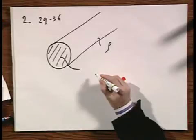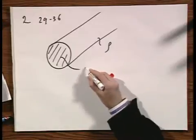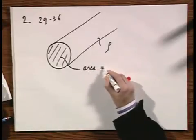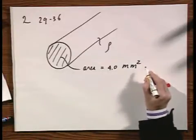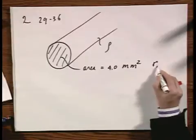I don't know what you want to call that area, whether you want to call it πr², it's an area. And it is 4.0 square millimeters. Let's give it a radius r₀.